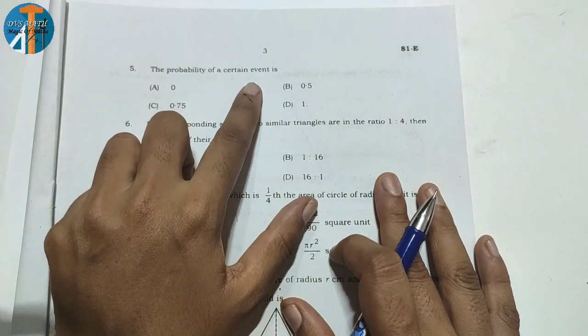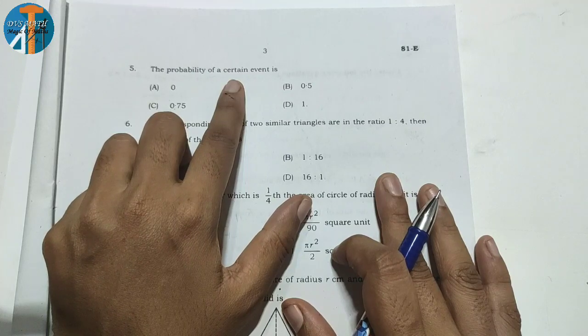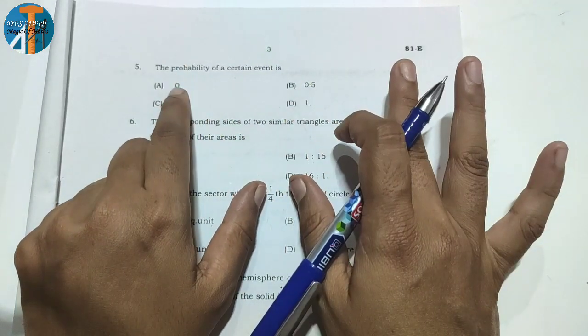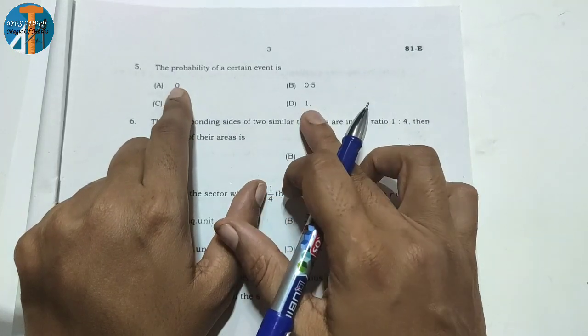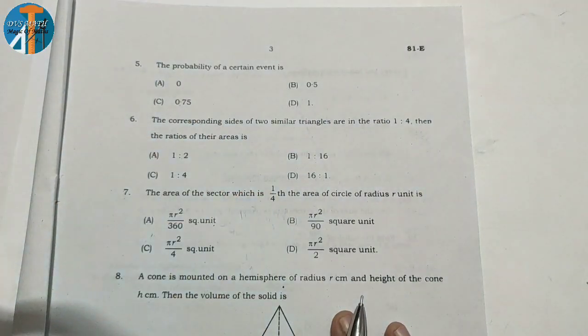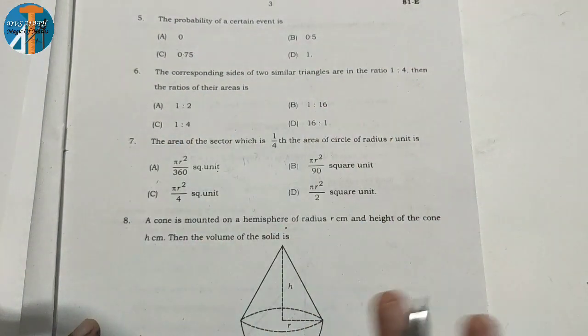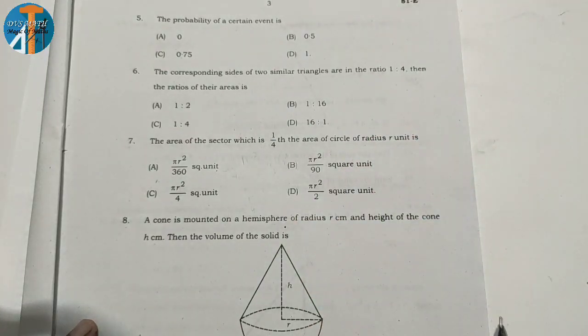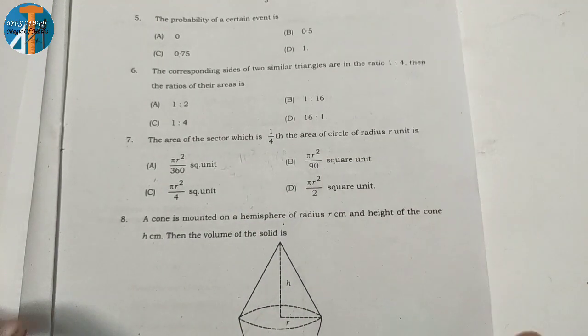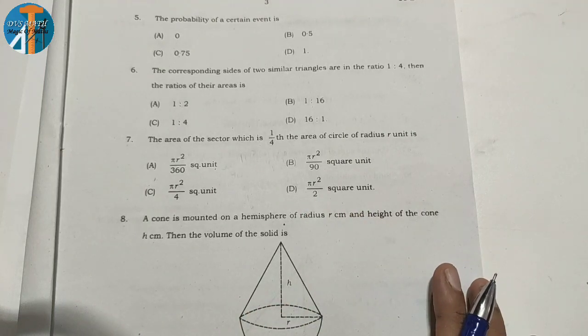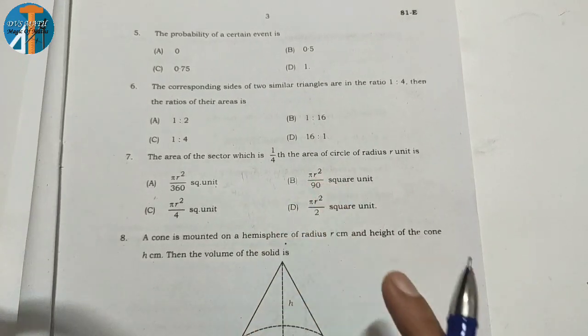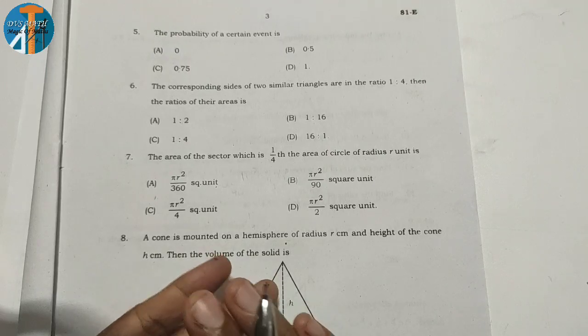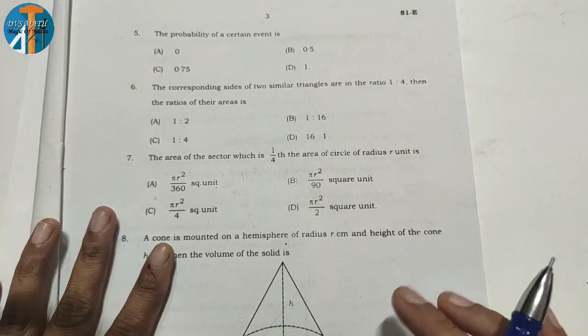Next question: The probability of a certain event. This is discussed in the probability lesson. For a certain event, the probability is 1. For an impossible event, probability is 0. If it's possible or certain, the answer is 1. So we have completed the MCQ section - 5 marks. Topics covered: prime factorization, number of zeros, quadratic formula, trigonometry, and probability.